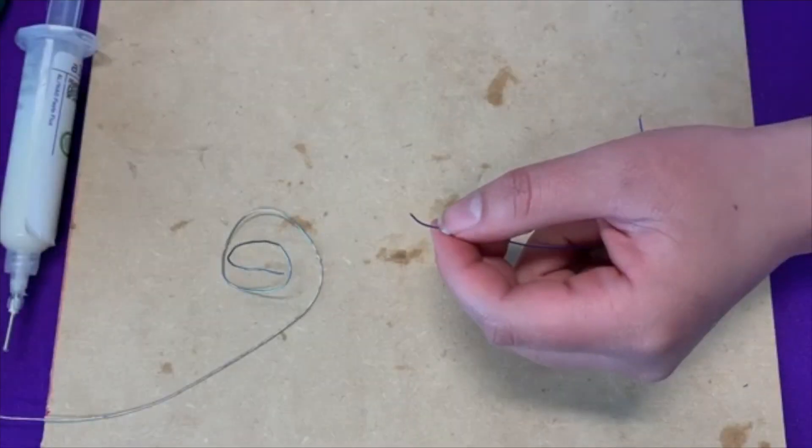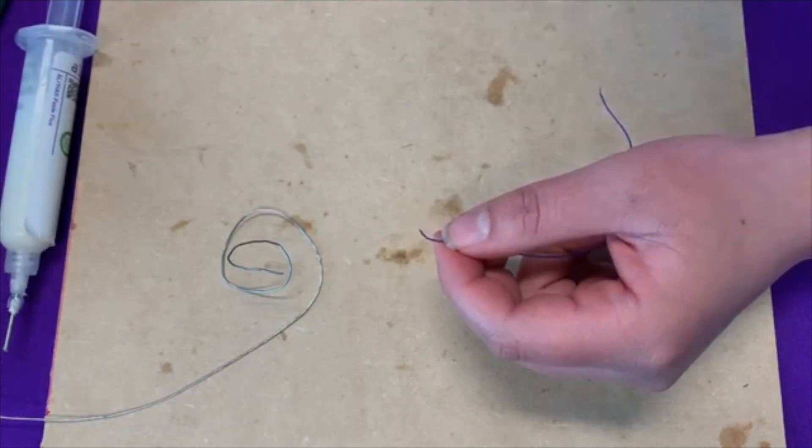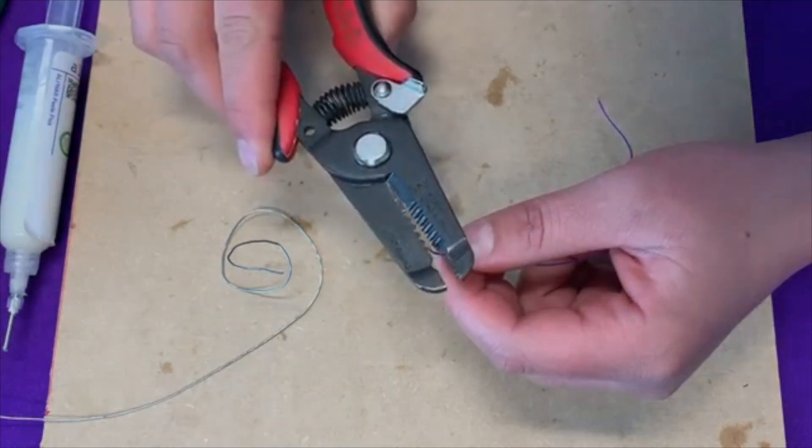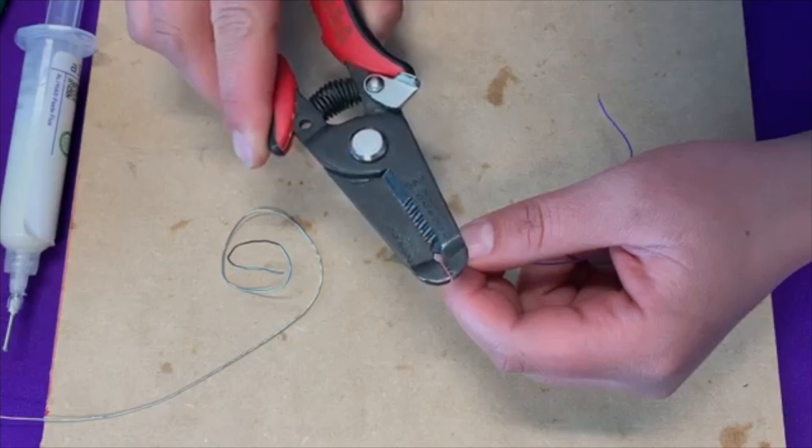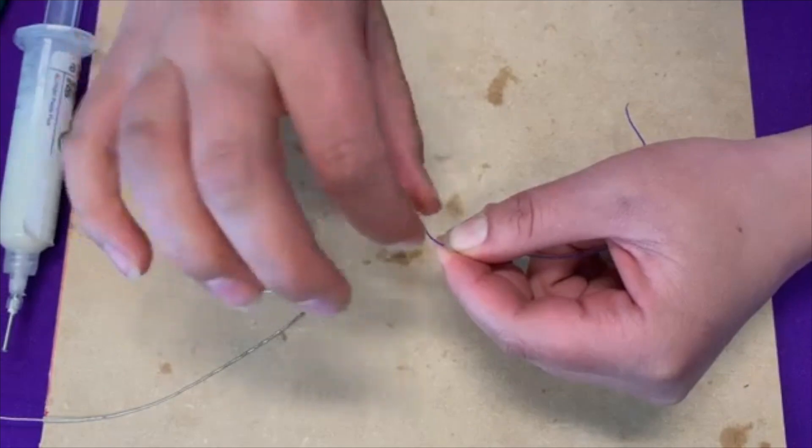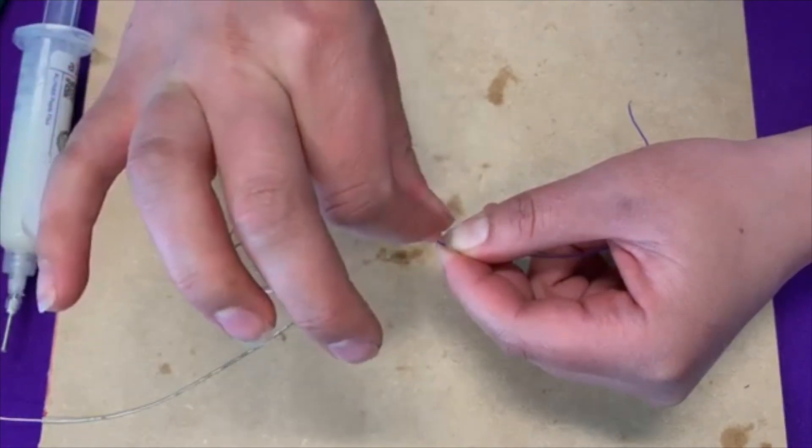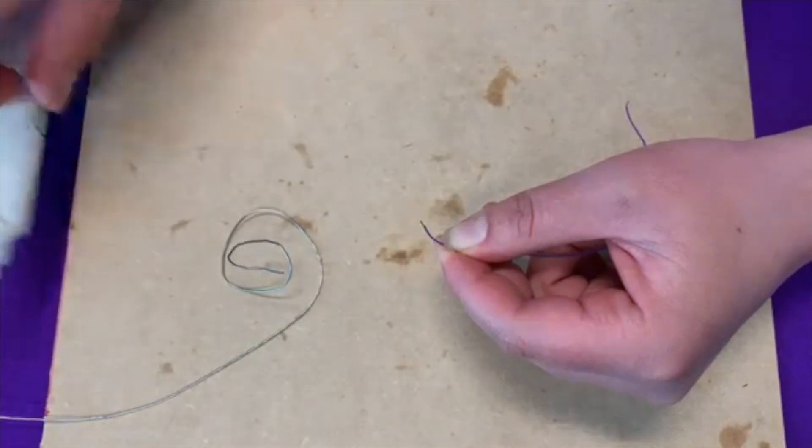Before we solder our wires to the decoder, we're going to strip and tin the ends of the wire. So we're going to take our wire strippers, about a quarter inch of the end of the wire. We're going to strip off the insulation and these are stranded wires. So we're going to twist them together so we don't have any extra wires getting in the way.